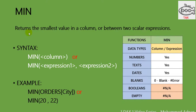MIN returns the smallest value in a column or between two scalar expressions. The syntax is: MIN with the column name of the table, or a minimum expression, or minimum expression 1 and 2. For example: MIN of Orders table with City as the column. Or you can use an expression like MIN(20, 22) — it will return the value 20.